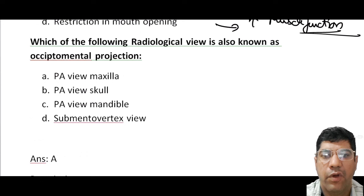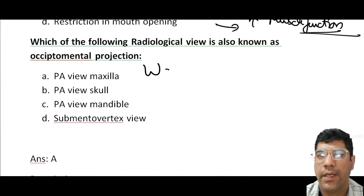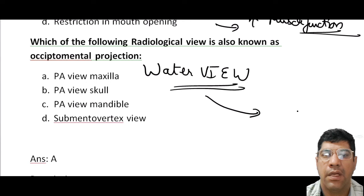Which radiographic view is known as the occipito-mental projection? It is the PA view of the maxilla, also known as the Waters view. This view is commonly used to visualize the maxillary sinuses.